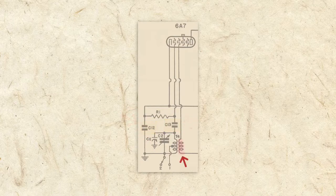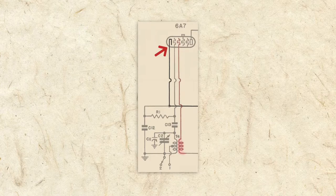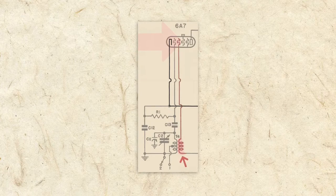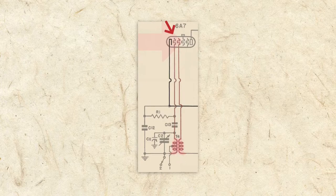The transformer primary sends a positive voltage to grid 2. This attracts electrons from the negatively charged cathode and current begins to flow to grid 2. The magnetic field from the primary is picked up by the secondary, sending a positive voltage to grid 1. This causes even more current to flow.